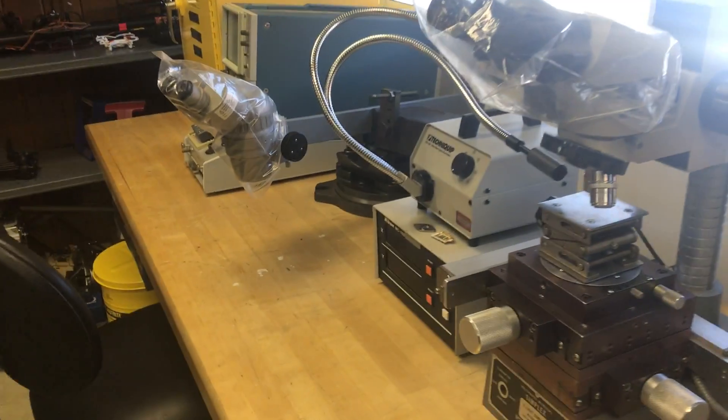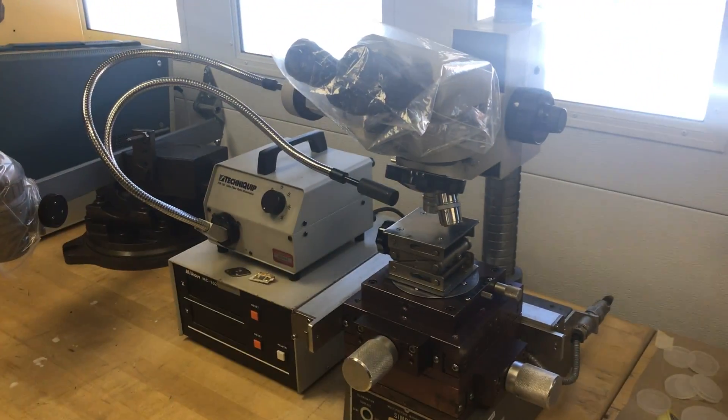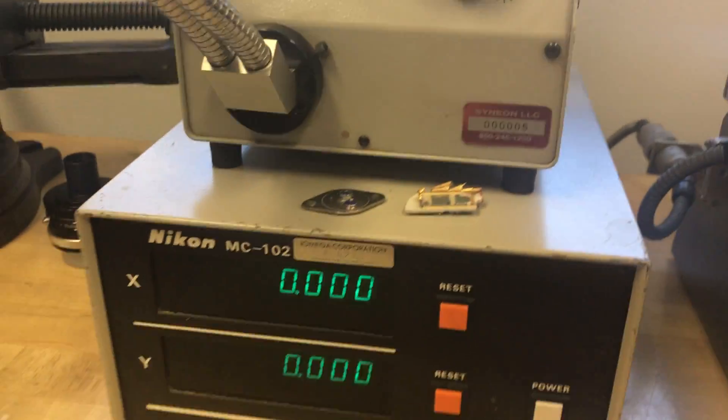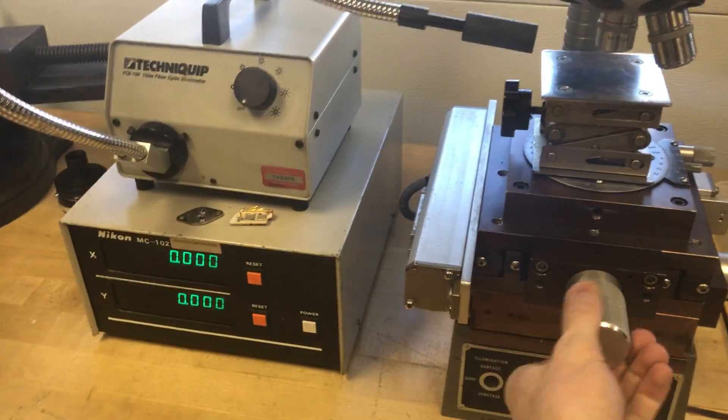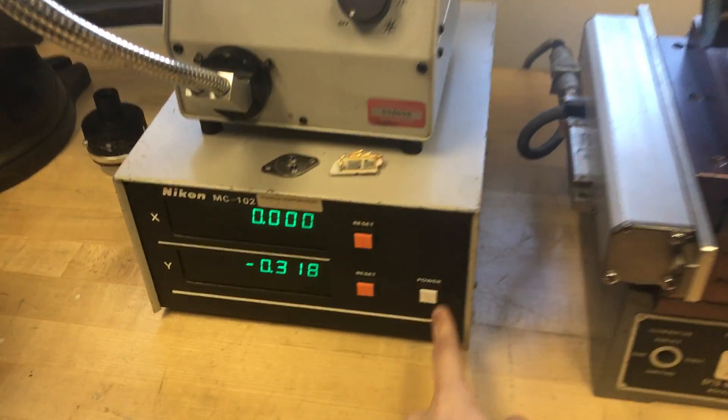A couple microscopes for semiconductor work. That's a Nikon right there. And it's got this awesome readout here that tells me stage movement down to a micron, which is pretty sweet. It's a great scope.